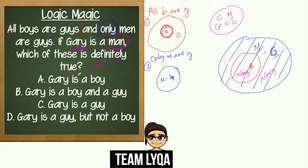The question is asking for what is definitely true — meaning 100% true. For Letter A, 'Gary is a boy': if you look at the diagram, Gary may be a boy, but you're not sure. There's a possibility that Gary is here — man and guy — but not a boy. So this is not 100% true, meaning Letter A cannot be the answer.